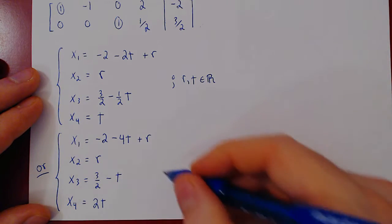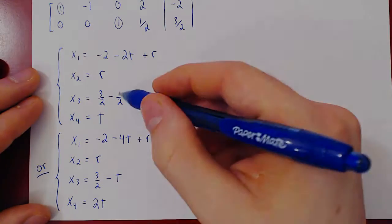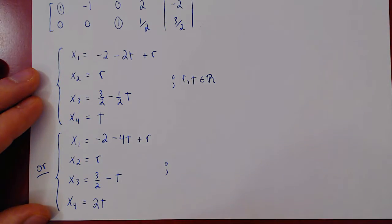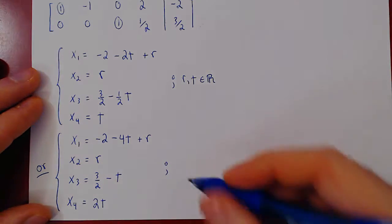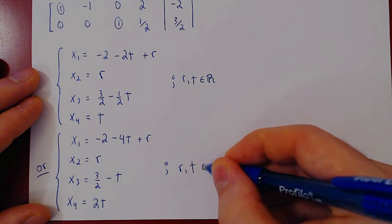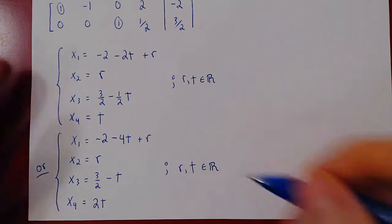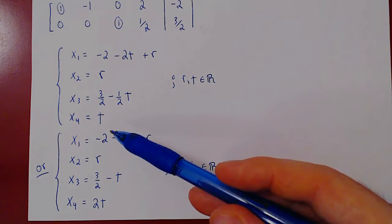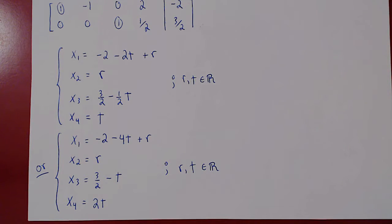Our solution set. Having replaced t by 2t, we kill off this fraction. And again, we state that r and t can take on any real value. And that's it. Here's our solution set in the best possible form.